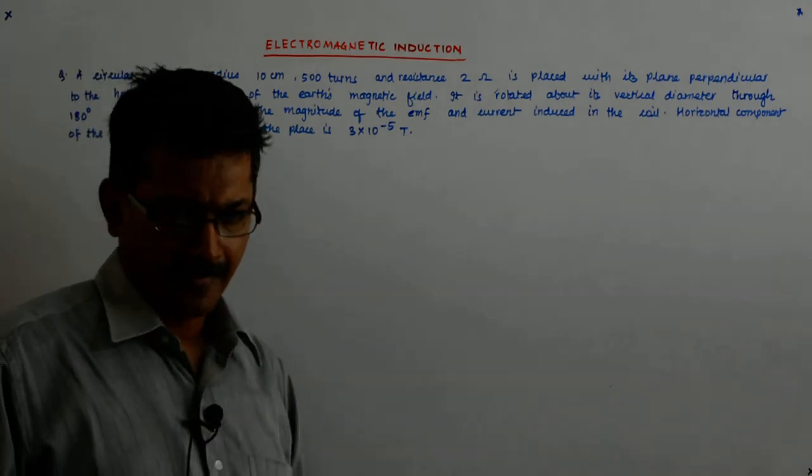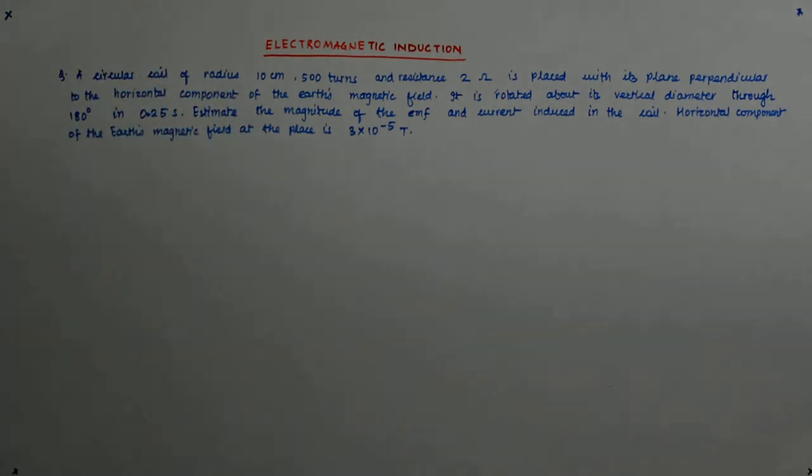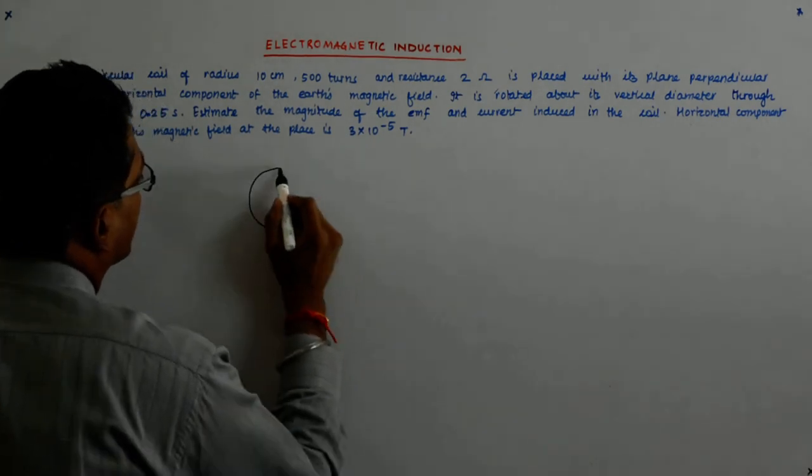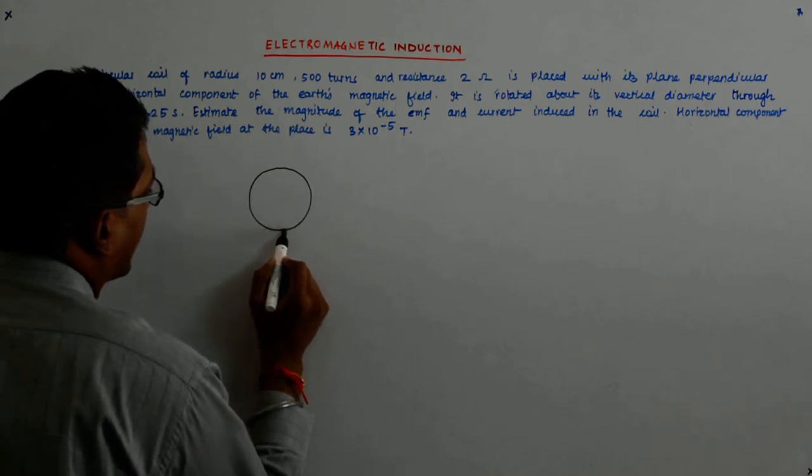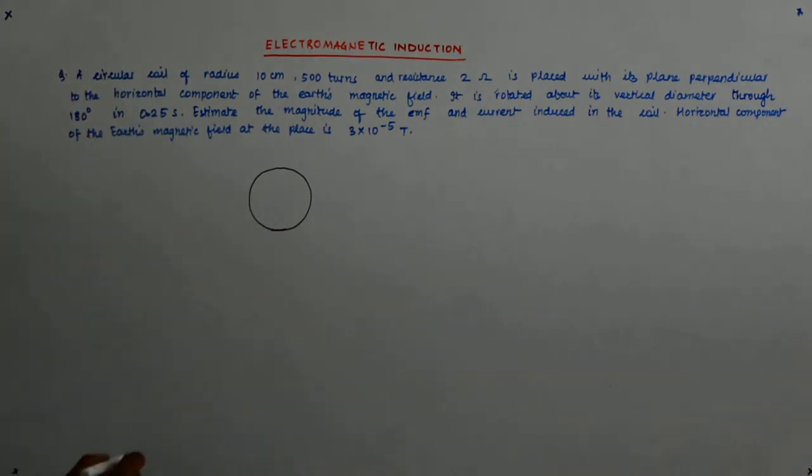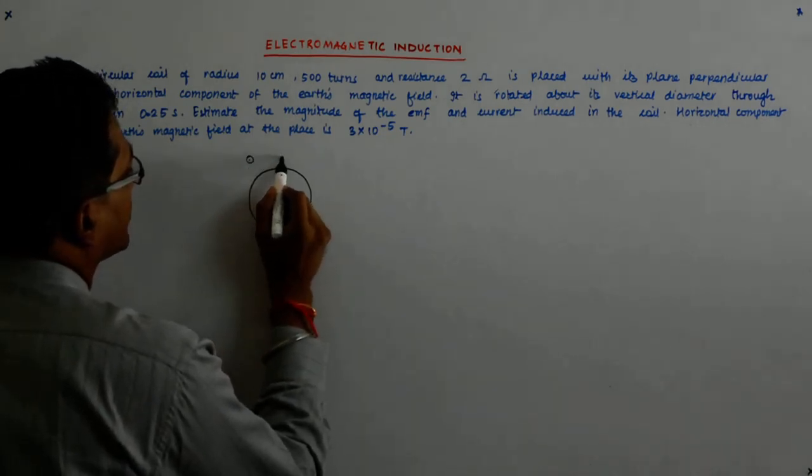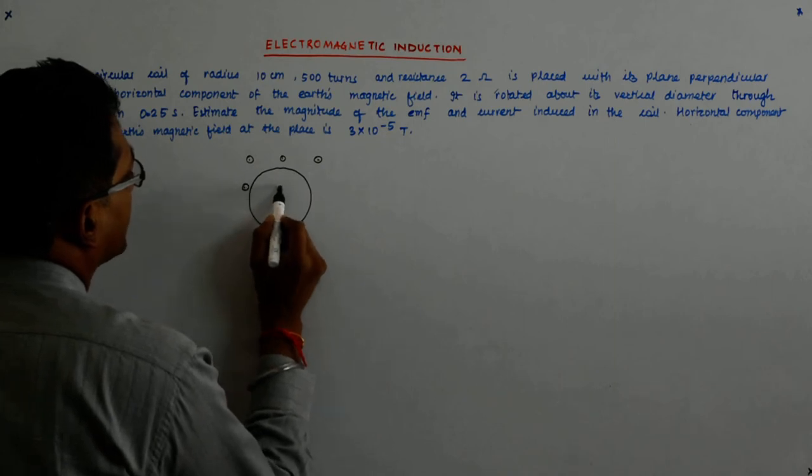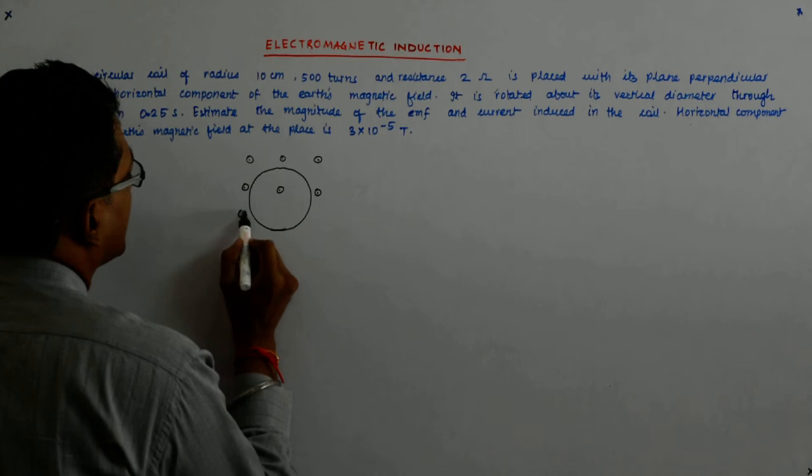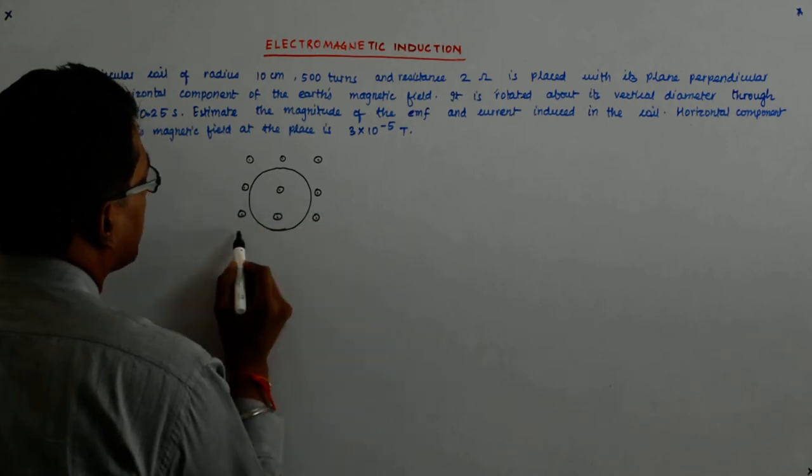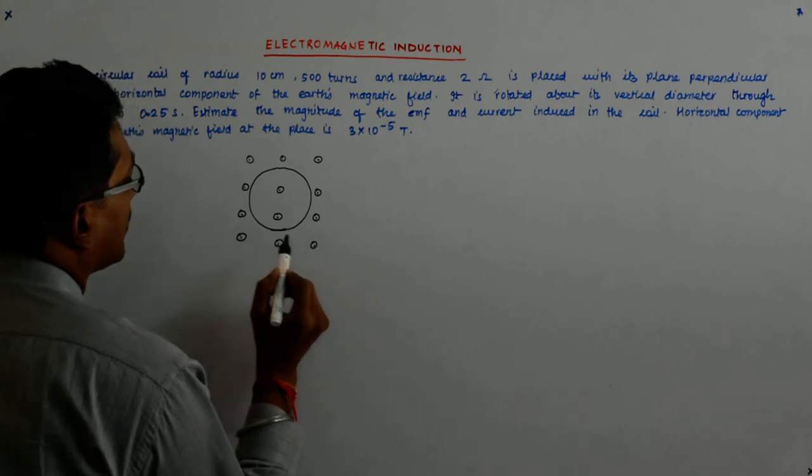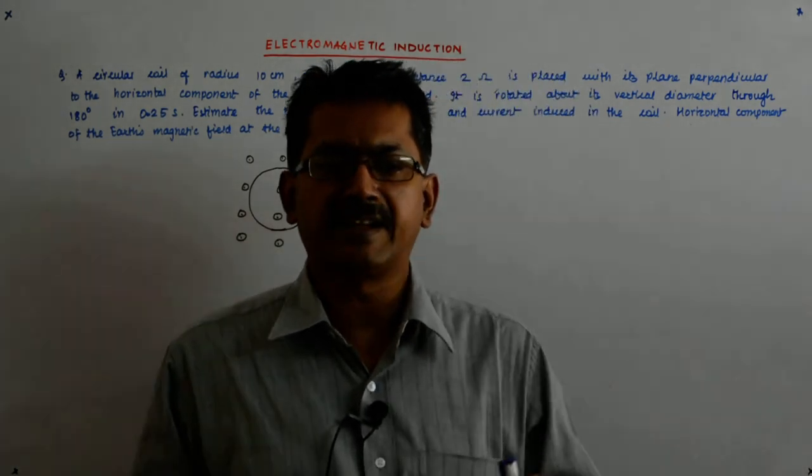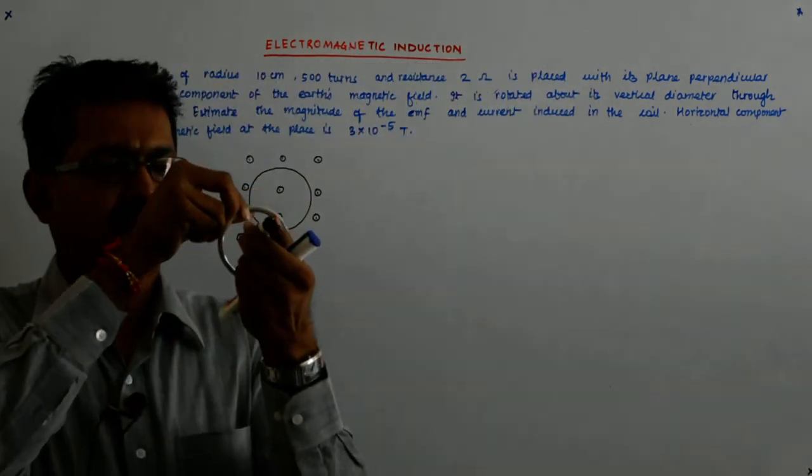Okay, now let us say I have this as my circular coil. And I assume that the earth's magnetic field is coming out of the plane. Since it is absolutely perpendicular to the plane of the coil, it is perpendicular to the plane of the coil, so it is actually parallel to the area vector.